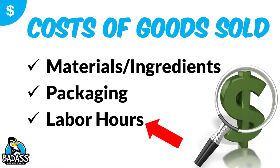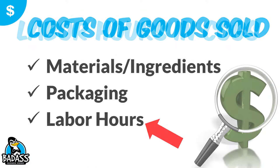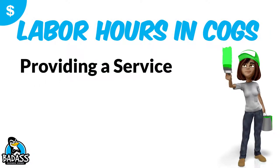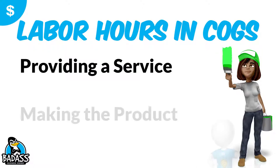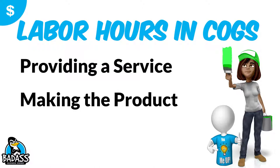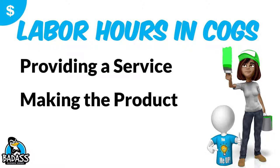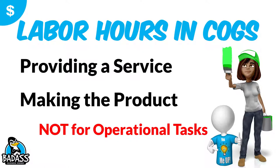Most people just lump it in as 'I want to make X,' but that's not the case. You're going to make X as an employee and as a business owner. Labor hours in your cost of goods cover the time spent actually doing the service — like two hours to install a water heater — or creating the product, like the labor to make a custom t-shirt. What you are not going to include here are operational tasks; those go under the expense side. What we're focused on are labor hours used to either provide the service or create the product.